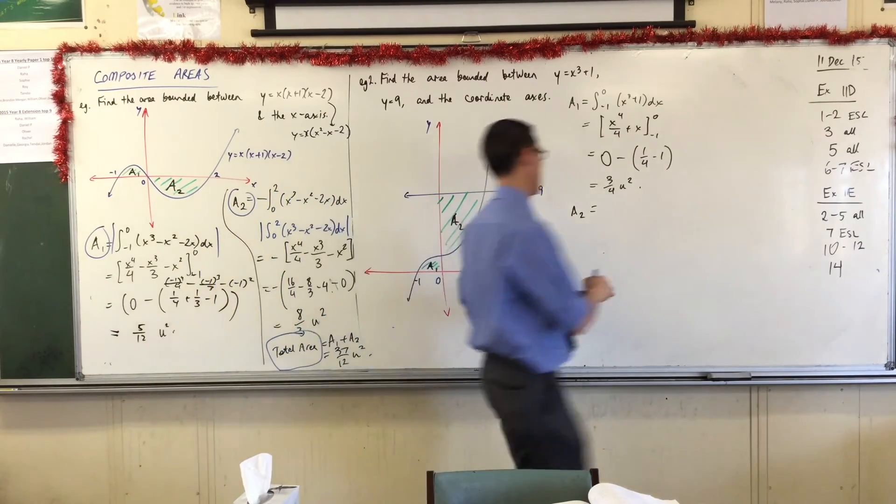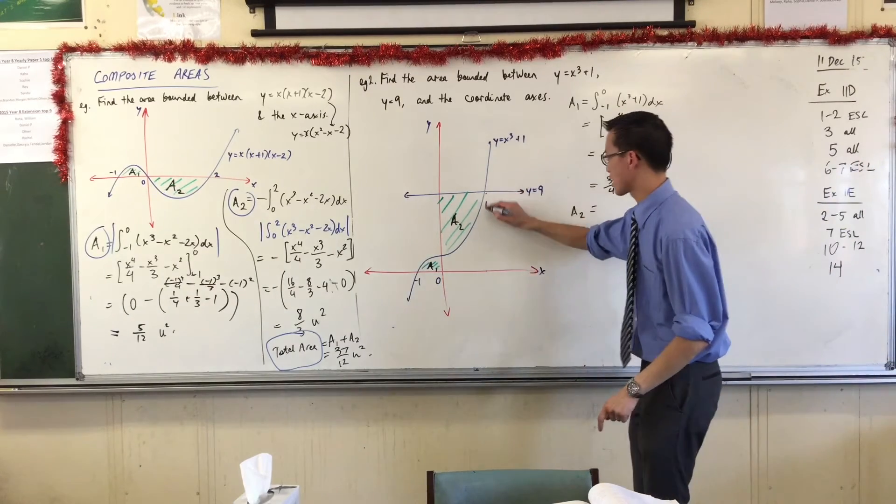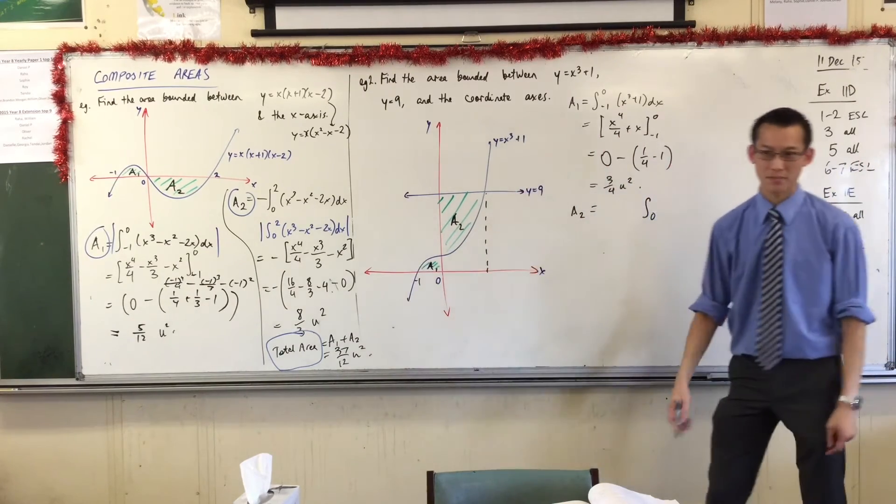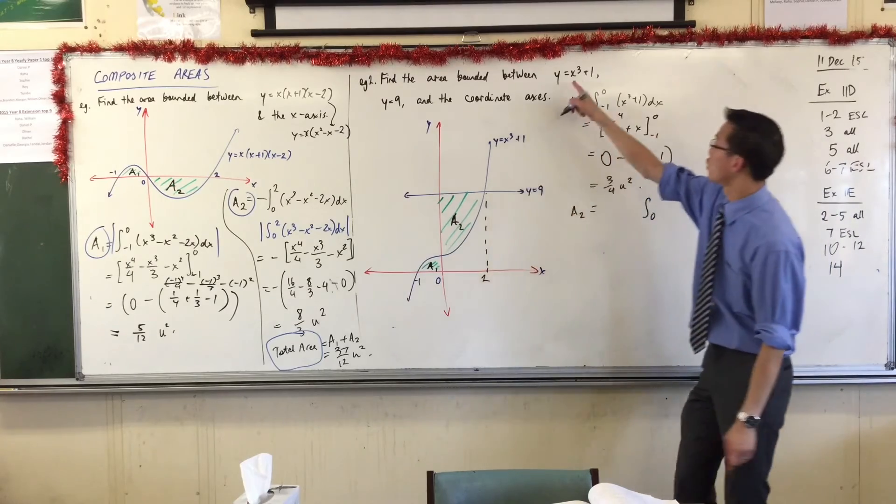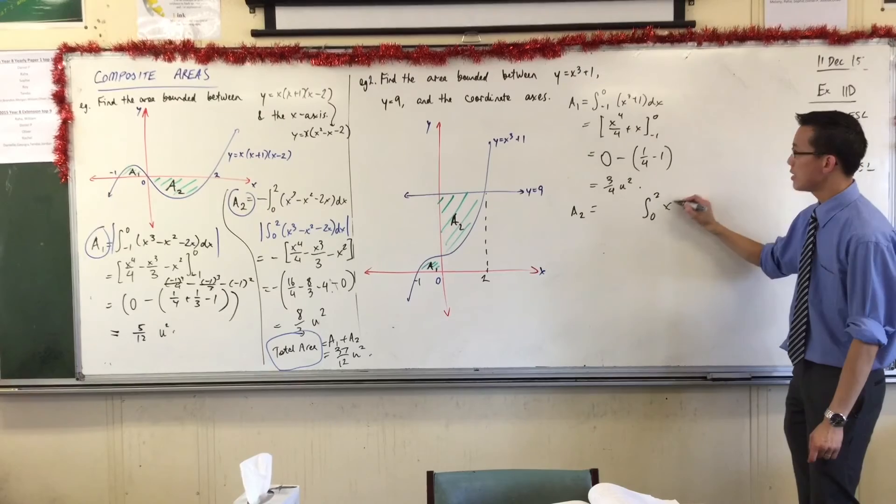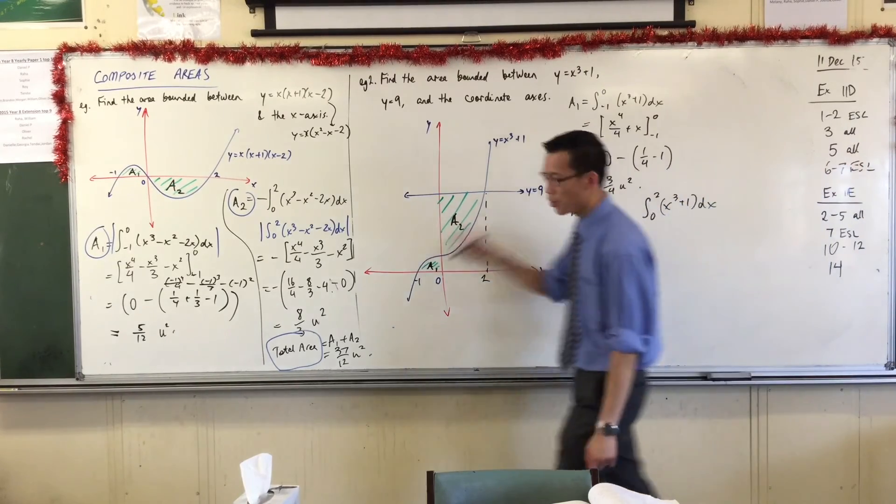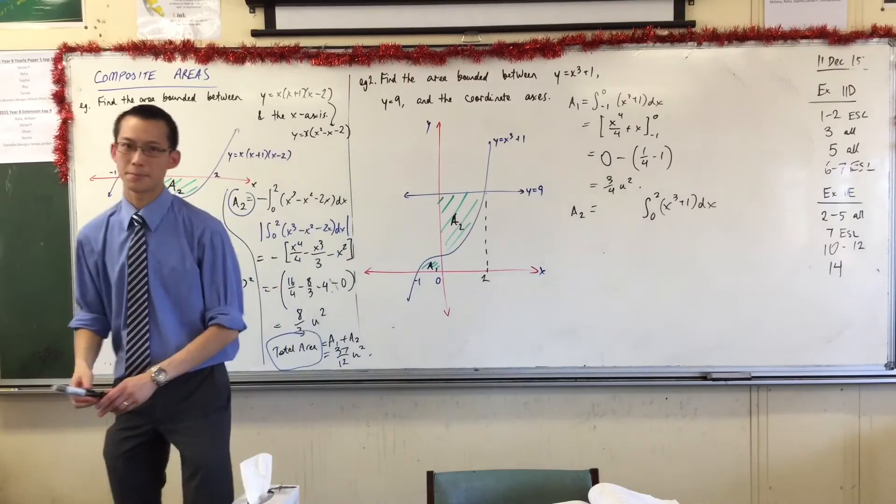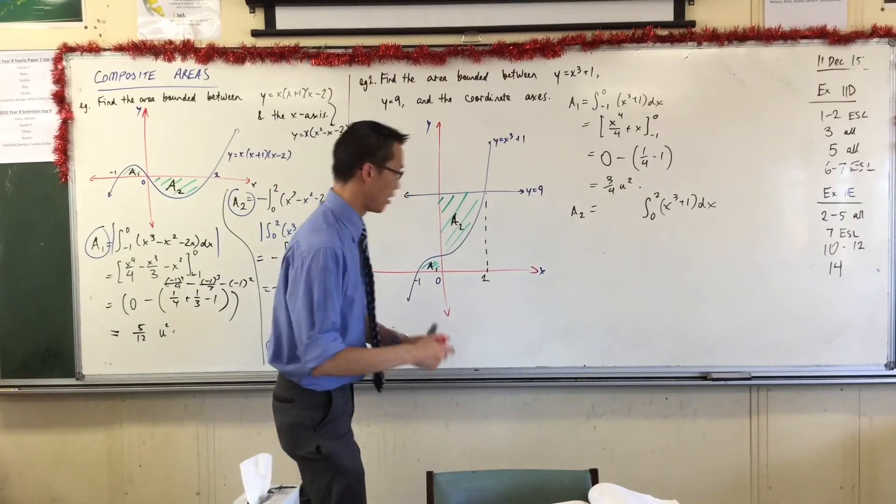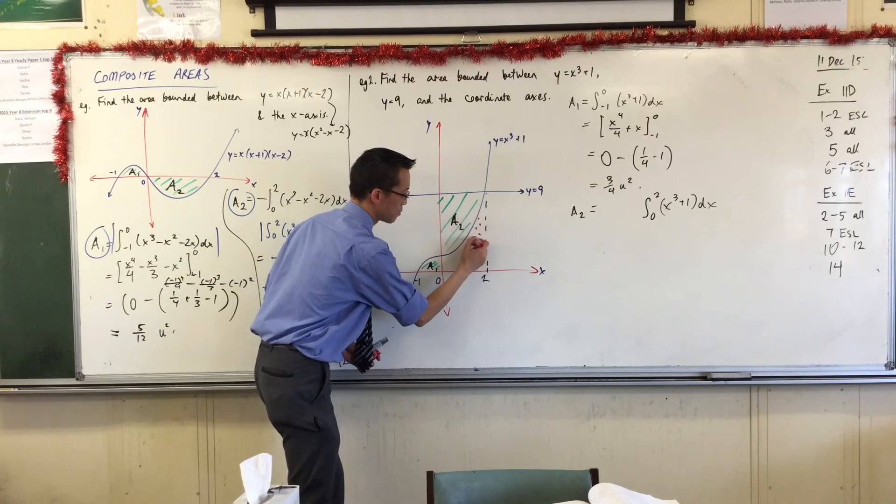So if I integrated, for instance, if I were to integrate from naught to, what's the x value that corresponds to that guy? It's going to be two because 2³ + 1 is nine. If I go from naught to two and I integrate x² + 1 with respect to x, I'm not going to get a2. What am I going to get? Yeah, the other part, right? I'm going to get this guy.